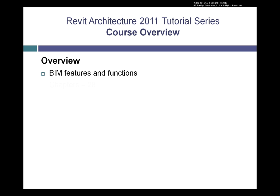We've divided the course into 28 logical chapters that you can take in sequence, with a total of 420 lessons. You can also search to find individual lessons on specific topics you're interested in. The content is very granular, with lessons approximately 4 to 6 minutes in length that can be resequenced and reordered so that you can watch them at any time and in any sequence that you want.